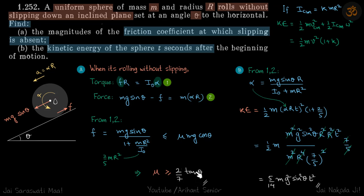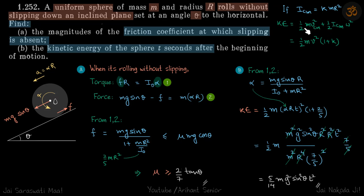For the second part, we need kinetic energy, so we need the acceleration. We get the value of alpha from those two equations. Kinetic energy will be half·m·v² times (1 + k). When a system is rolling, the kinetic energy is half·m·v_cm² plus half·I·omega².